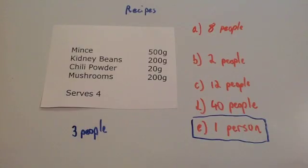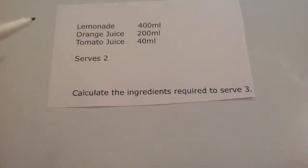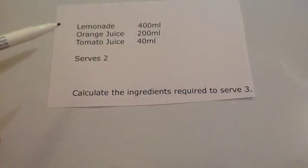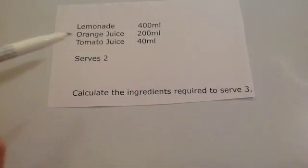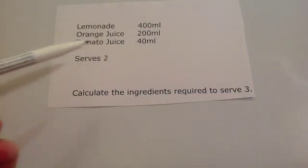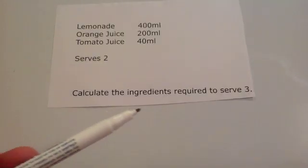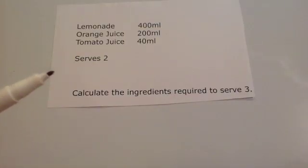Let's have a look at some examples now. Here we've got a recipe for a drink. It uses 400 ml of lemonade, 200 ml of orange juice, 40 ml of tomato juice, and it serves two people. It then says calculate the ingredients required to serve three people.